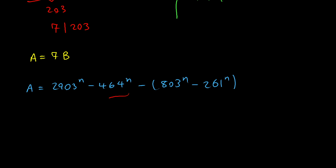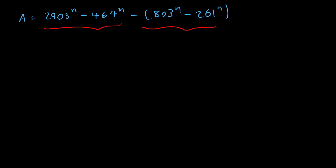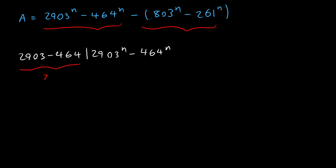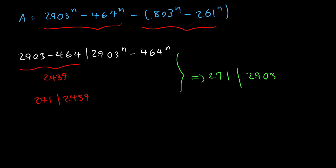Let's use the divisibility property with these two terms. We can say that 2903 minus 464 divides 2903 to the nth power minus 464 to the nth power. The left hand side is 2439, and if we factor this, we can say that 271 divides 2439. So if we put these two together, we can say that 271 divides 2903 to the nth power minus 464 to the nth power.